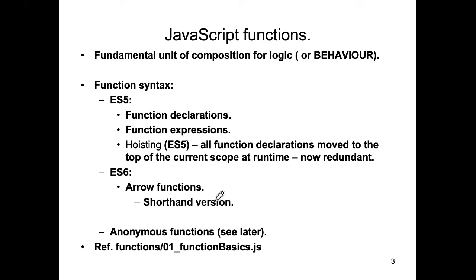From day one, JavaScript always had the notion of an anonymous function — a function with no name, which sounds odd initially. How could you invoke a function if it doesn't have a name? It turns out that anonymous functions are something we use a lot, and there is one use case for them that arises very frequently in our code.